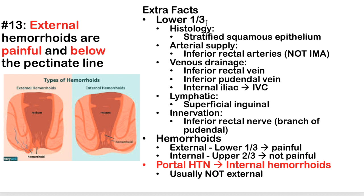The lower one-third has stratified squamous epithelium (hence squamous cell carcinoma rather than adenocarcinoma). Arterial supply is from the inferior rectal arteries, which come from the internal pudendal arteries — not from the inferior mesenteric artery. This is commonly confused with the superior rectal artery. Venous drainage goes from inferior rectal vein to internal pudendal vein to internal iliac to IVC. Lymphatics are superficial inguinal. Innervation is via the inferior rectal nerve, a branch of the pudendal nerve.